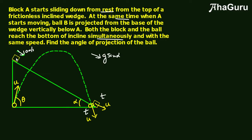Now let us look at the first equation. The block starts from rest and its speed increases from 0 to u. Using v = u₀ + a·t, the final velocity u equals g·sin(α)·t. So our first equation is: u = g·sin(α)·t.